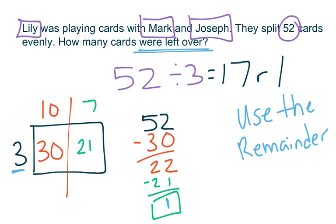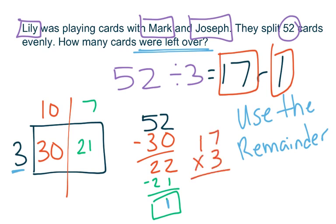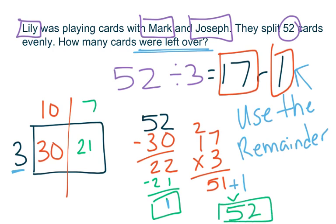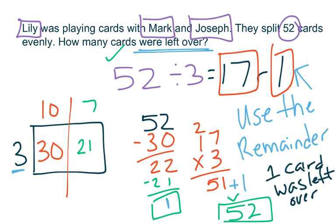I can see right here very clearly that my answer is one. However, I want to make sure I'm checking my work to confirm my answer actually is one. I'm going to do some multiplication to check my work. I'm going to take my quotient of 17 and multiply it times my divisor of 3. Three times 7 is 21, I carry my 2. Three times 1 is 3, plus 2 gives me 5. Then I'm going to add my remainder of 1. When I add my remainder of 1, I should end up with my dividend — the total number of cards I started with — which I do. This is a great way to check my work to make sure I did my division correctly. So in this problem, one card was left over.